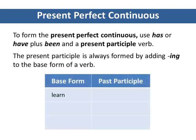Learn becomes learning. Weave becomes weaving. And buy becomes buying. There are no verbs that have an irregular present participle form.